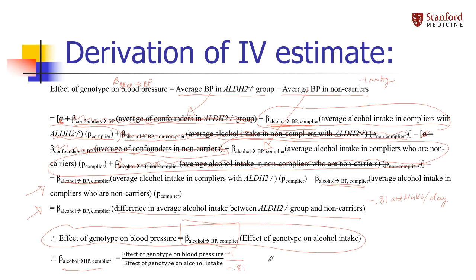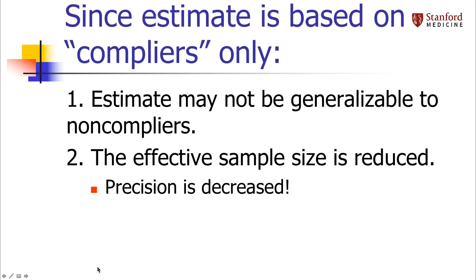Now I've proved that equation is true. What I want to isolate is the effect of alcohol on blood pressure — that's now easy algebra. I've shown that the effect of alcohol on blood pressure in compliers is again the effect of genotype on blood pressure divided by the negative 0.81, as before. One important thing to note is that I have estimated the effect only in the complier group — notice that everything about non-compliers has been canceled out.